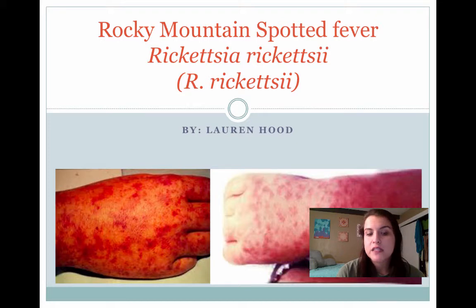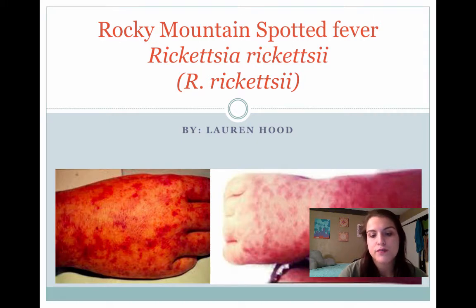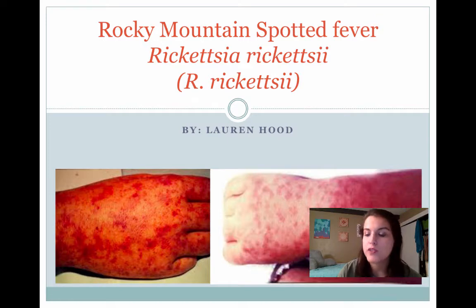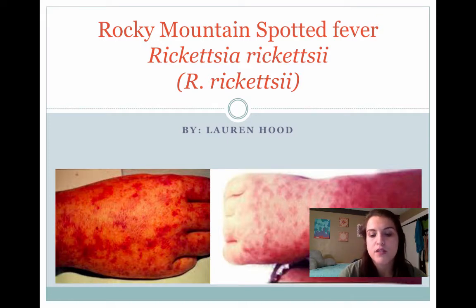Rocky Mountain Spotted Fever kind of got its name from its characteristic rash, which is shown in this picture. It's a red, flat, non-itchy rash that starts on the hands and feet and spreads to the rest of the extremities. It's a centripetal spread, which means it starts from the extremities and then moves on to the other parts of the body.